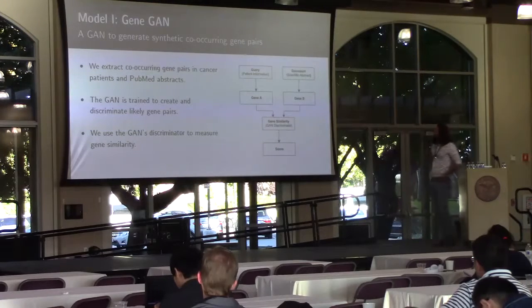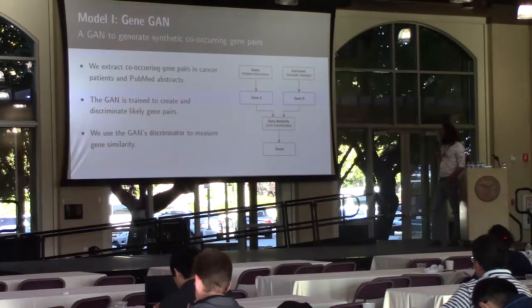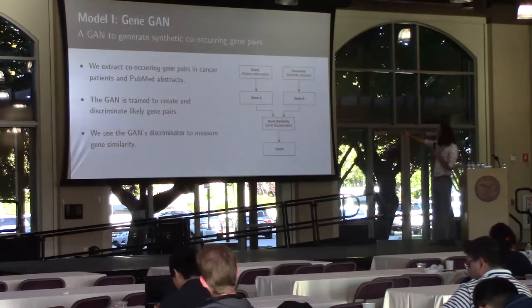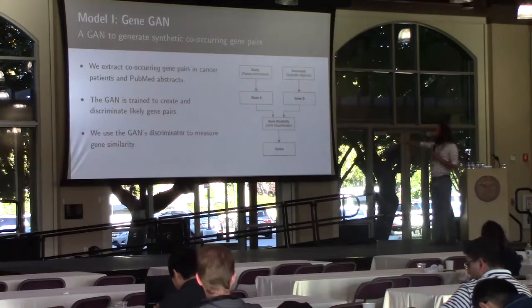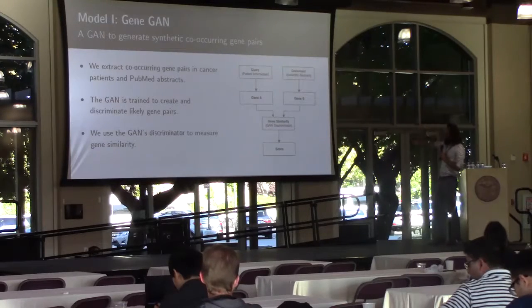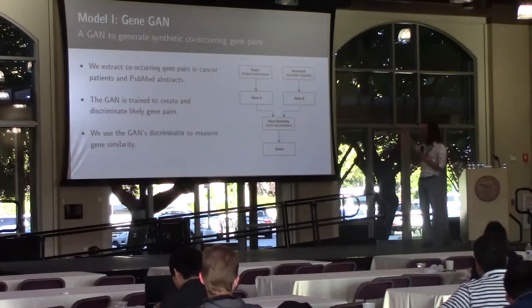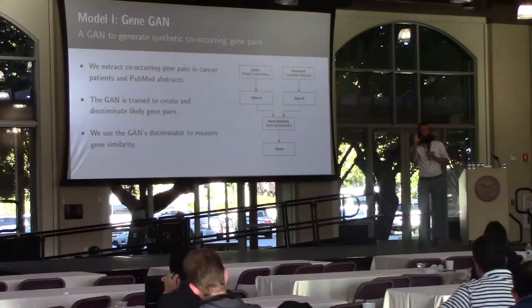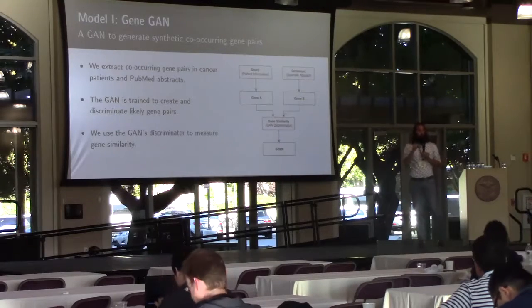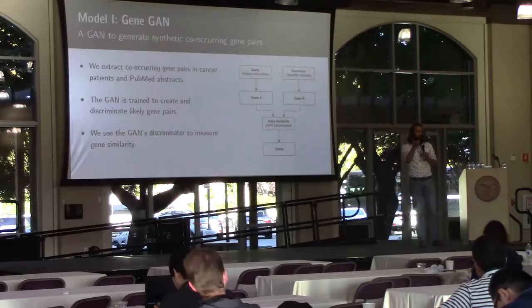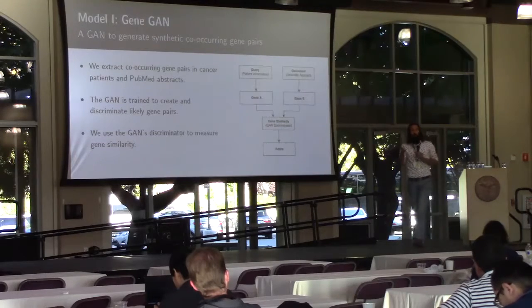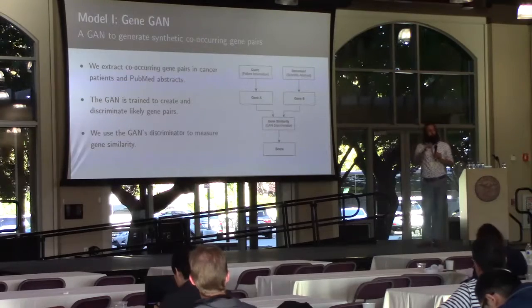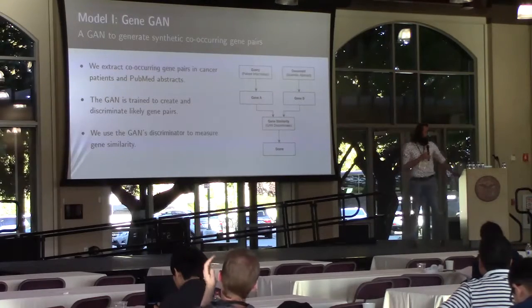The first model, which we call GeneGAN, is very simple. We have our query on one side — the patient information, which contains gene A or a group of genes. And we have our document that is considered for ranking, which also mentions some genes. We just use the discriminator of the GAN we trained and let it say how likely these two are to co-occur within a patient. If these are things that often co-occur, it gives a high score, and we use documents that may not be an exact match but have sufficient information for that patient.